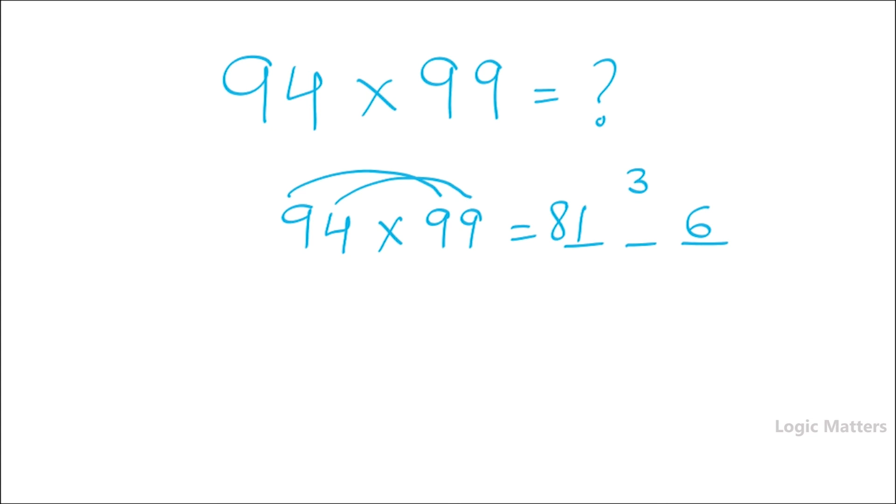Now multiply 4 with 9. That gives an answer of 36, plus 9 multiplied with 9 will give you an answer of 81. So 36 plus 81 will give you an answer of 117. Now what we need to do is accommodate 7 over here and carry forward 11 here.